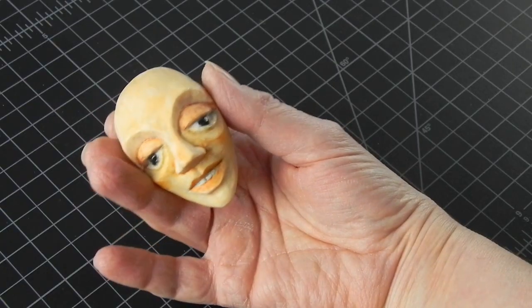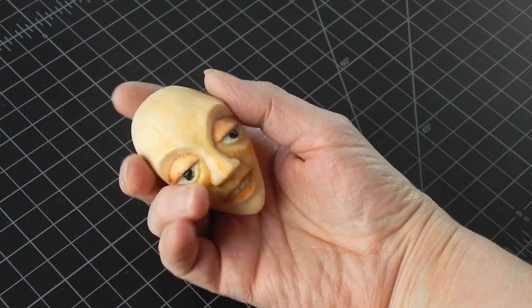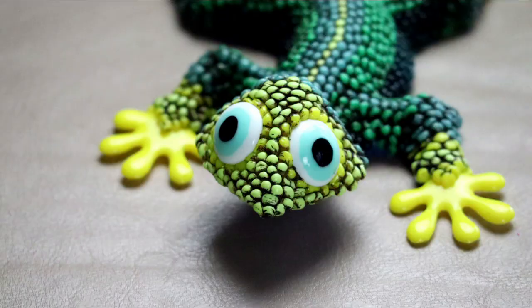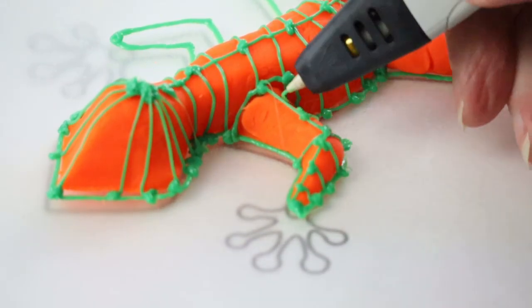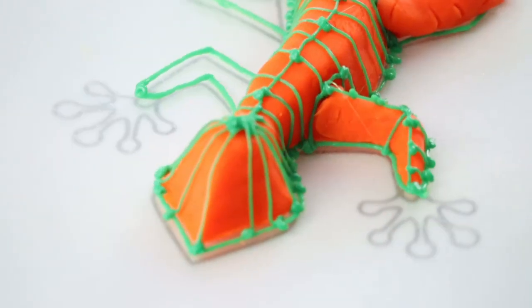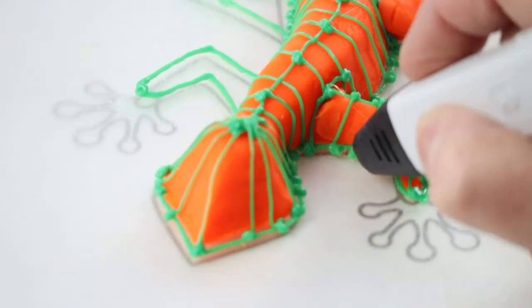But if you want to make a small intricate sculpture of a character or an animal, let's say a lizard, you will want to take a different approach. Like this one. So check this out next, and if you need to know more, subscribe!